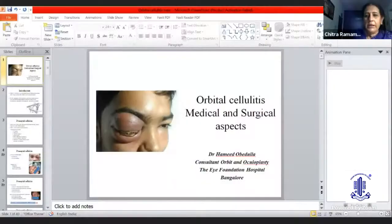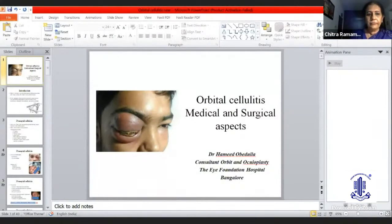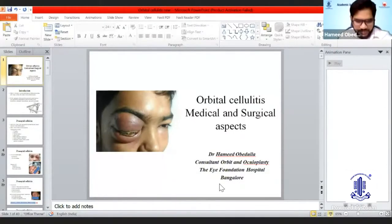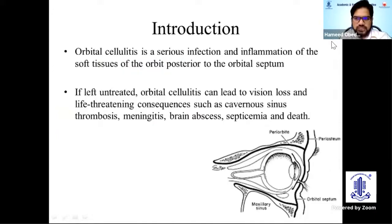Thank you, ma'am, for the introduction. At the outset, thank you AIS and Chitra ma'am for giving me the opportunity to present along with the experts. I'll be talking about orbital cellulitis today — its surgical and medical aspects. Orbital cellulitis is a serious infection and inflammation of the soft tissues of the orbit posterior to the orbital septum.